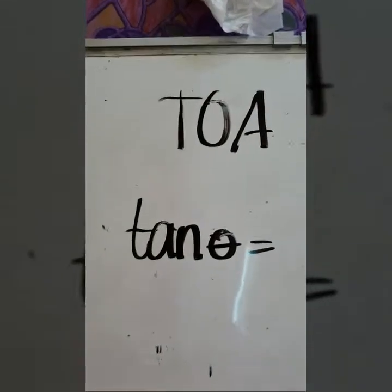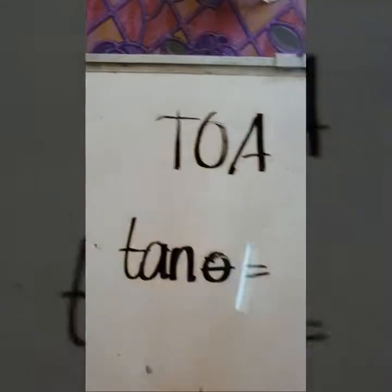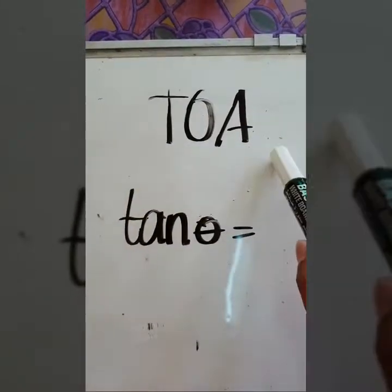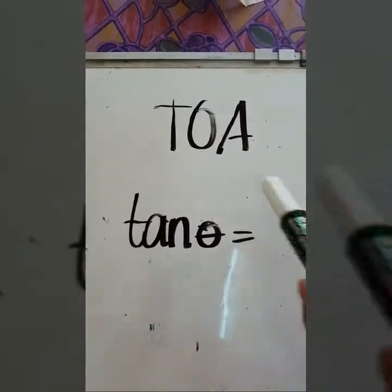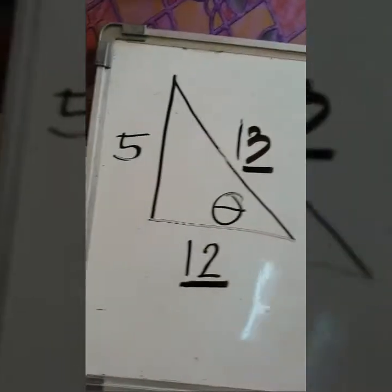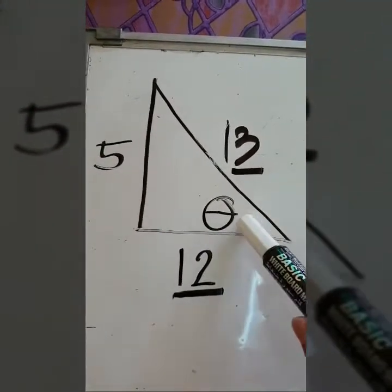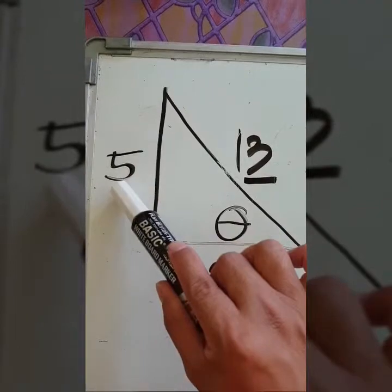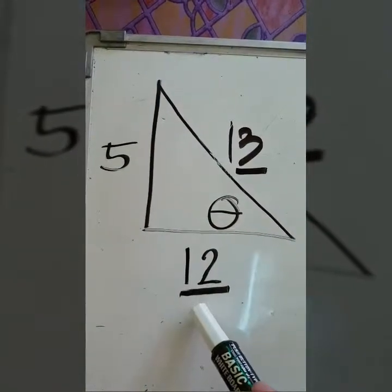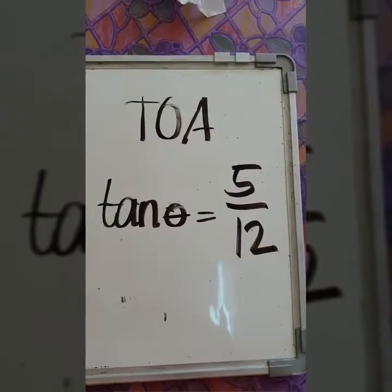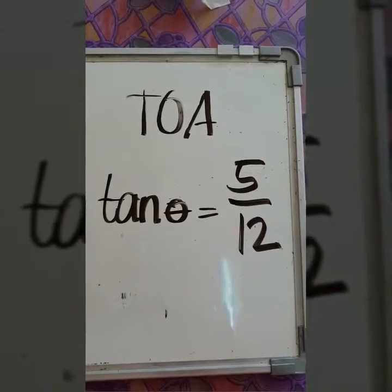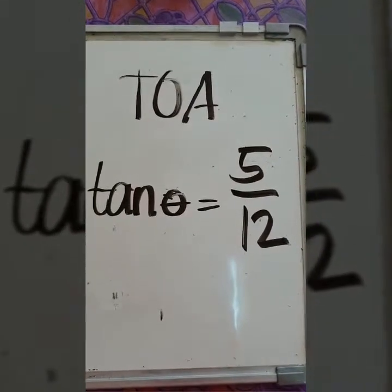The last one is tangent theta. Using TOA, the formula is opposite over adjacent. The opposite side is 5 and the adjacent side is 12. Therefore, tangent theta is equal to 5 over 12. Important reminder for fractions: reduce your answer to lowest terms if and only if it is necessary.